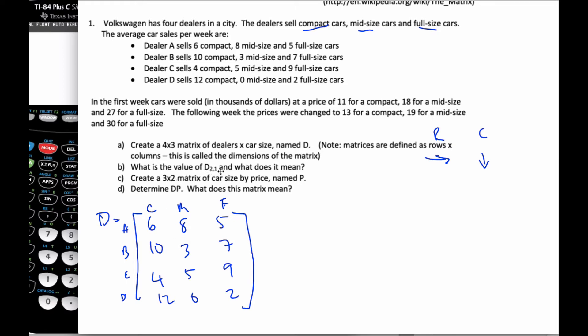So what is the value of D2,1? Well, D2,1 is rows by column, always rows by columns. And I had a really hard time remembering this when I was a student. But we had RC Cola, which wasn't very good, but I remembered RC Cola was how I could go rows by columns to remember it. That's my mnemonic device. So D2,1 means row 2, column 1, this value here. And that means specifically that dealer B sells 10 compact cars in a week on average.